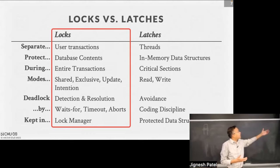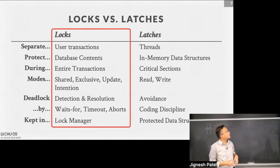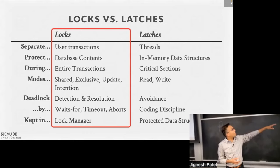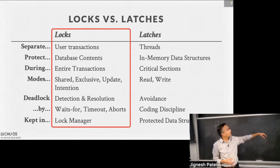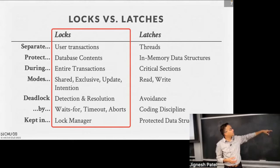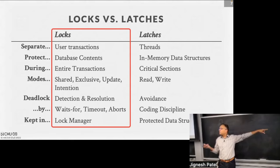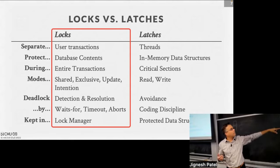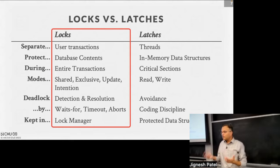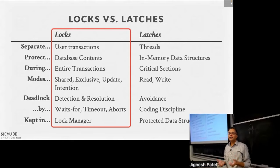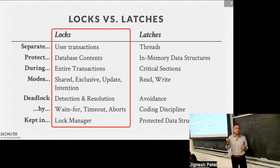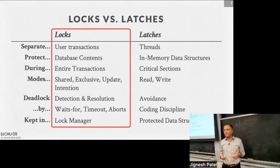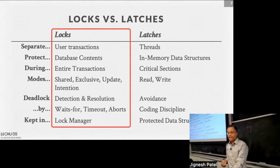Locks have inbuilt deadlock mechanisms allowing you to get out of trouble if you get into it — the mechanisms are wait-for and timeout. The state for locks — who has what and what's being requested — is kept in the lock manager. For latches, when writing C++ code, that state is in some protected data structure. So latches are in memory, protect threads from getting into trouble, and require a lot of programmer discipline. Locks are for things on disk, held for a longer time, and have many more mechanisms associated with them like deadlock detection.